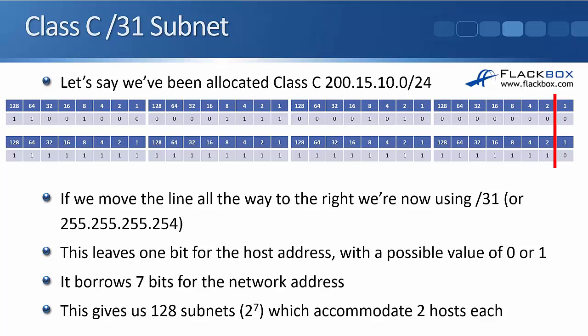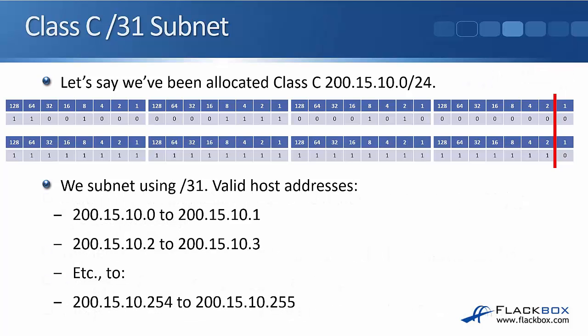So a class C slash 31 borrows seven bits for the network address from the host address. That gives us 128 subnets — 2 to the power of seven: 2, 4, 8, 16, 32, 64, 128. And that's going to accommodate two hosts each. The valid host addresses would be 200.15.10.0 to .1, 200.15.10.2 to .3, 200.15.10.4 to .5, et cetera, all the way up to 200.15.10.254 and .255.